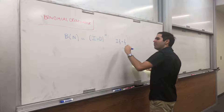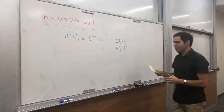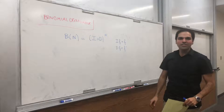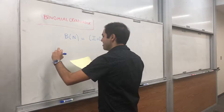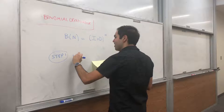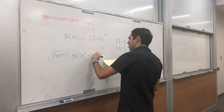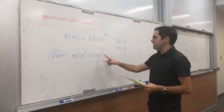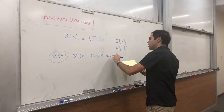Let's calculate some examples and I'll give you a small application at the end. Step one: what happens when we apply the first binomial derivative to e^x? B_1(e^x) = (I + D)(e^x) = e^x + the derivative of e^x = e^x + e^x = 2e^x.